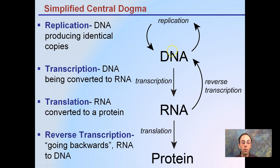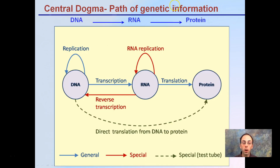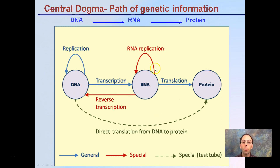Typically, we think of going from DNA to RNA to a protein. Again, the central dogma presents it in a slightly different format. We can see the same terms used: replication, transcription, and translation, moving from DNA to RNA to a protein. There are special cases where we can skip certain steps — certain viruses may want to go backwards, using reverse transcription and other mechanisms in the cell.